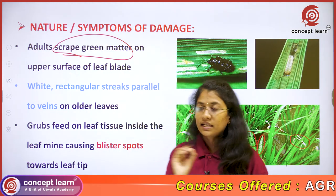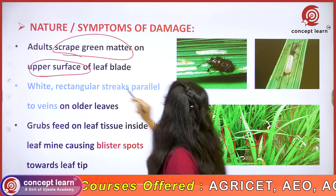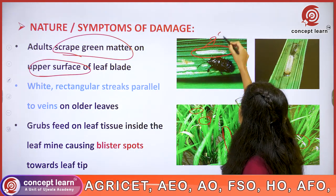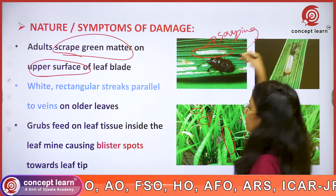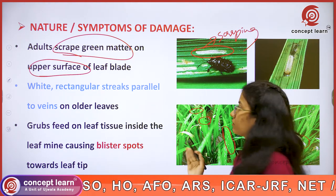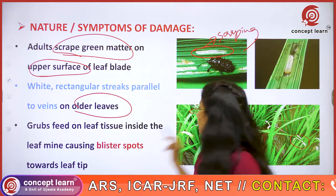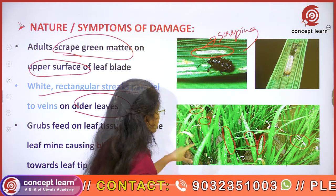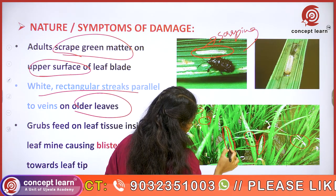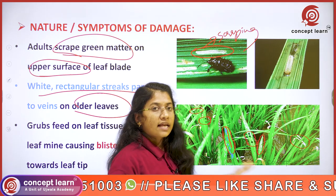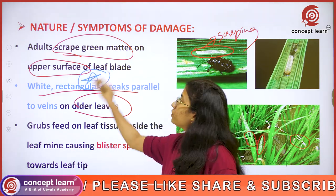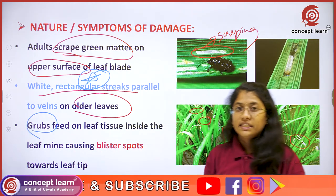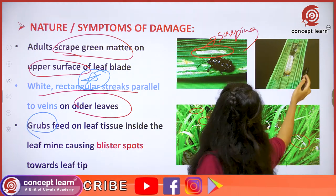Adults scrape the green matter on the upper surface of the leaf blade. On older leaves, several white rectangular streaks parallel to the midrib can be seen. These parallel rectangular streaks are characteristic damage symptoms caused by the rice hispa adult.